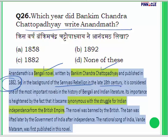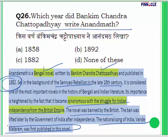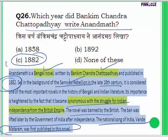Anand Math talks about the Indian freedom struggle. This novel was banned by the British but the ban was later lifted after India became free. Most importantly, our national song 'Vande Mataram' was first published in this novel. You can be asked: who wrote Anand Math, which rebellion it refers to, or in which novel Vande Mataram was first published. The answer to question 26 is 1882.